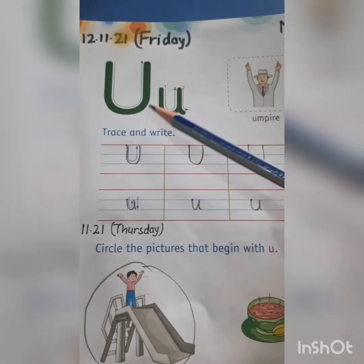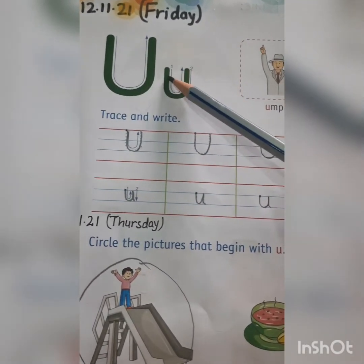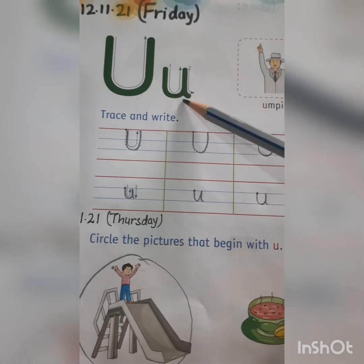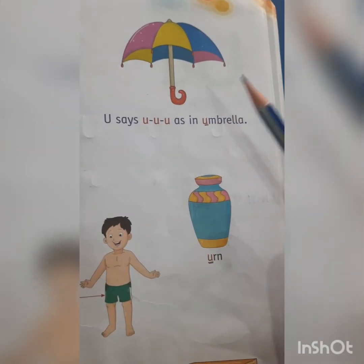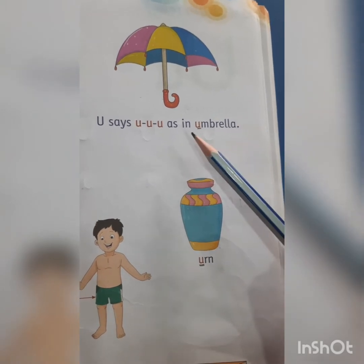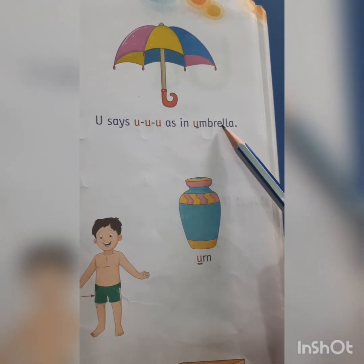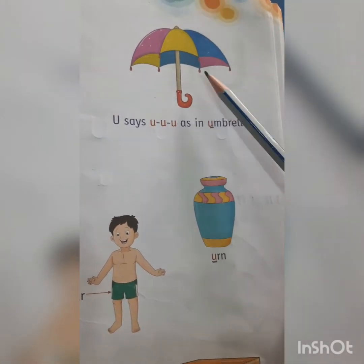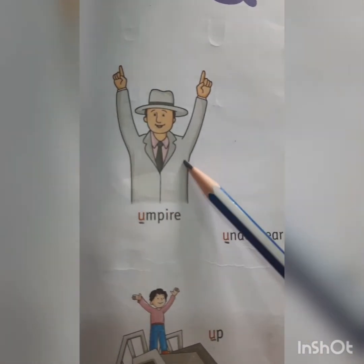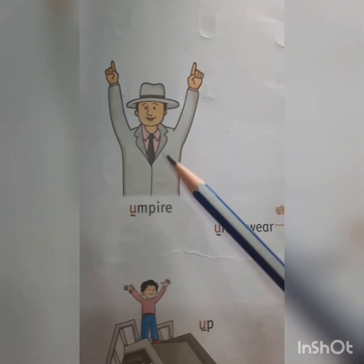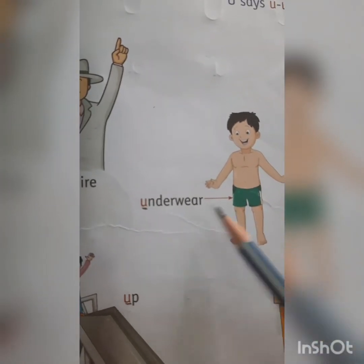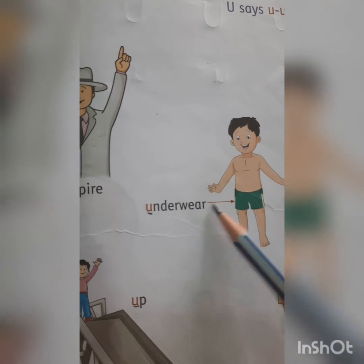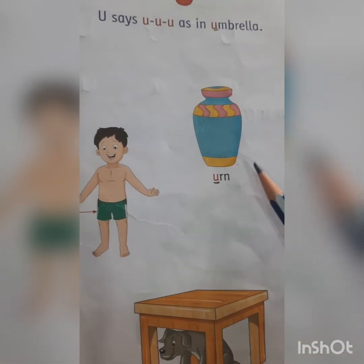Which letter comes after T children? It's letter U. This is mama letter U, this is baby letter U — capital U and small u. What is the sound of letter U? It is 'U' in umbrella. Let's see the letters in the word umbrella: U-M-B-R-E-L-L-A. Umbrella. This is an umbrella. Say the name of the next picture — who is he? Umpire. U-M-P-I-R-E. Umpire. U-N-D-E-R-W-E-A-R. Underwear. U-R-N. Urn.